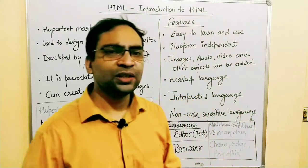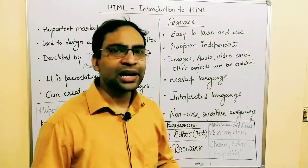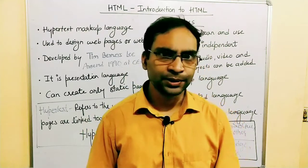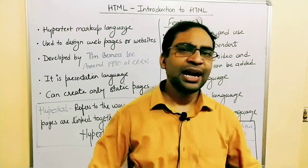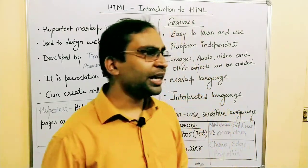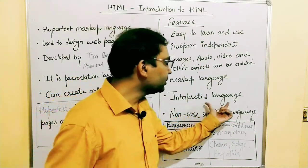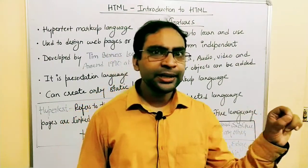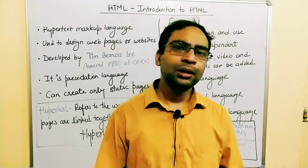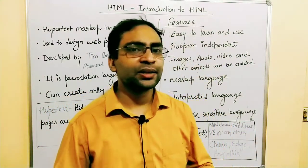We have already seen that it is a markup language where we can mark text and specify a special presentation. Next, it is an interpreted language. All languages use translators to convert code written in English into machine language. HTML uses an interpreter, so it is an interpreted language where line-by-line translation of the code is done.